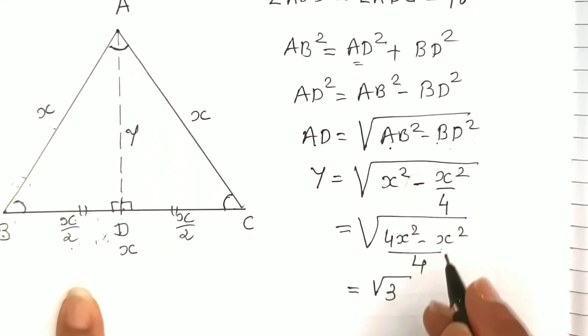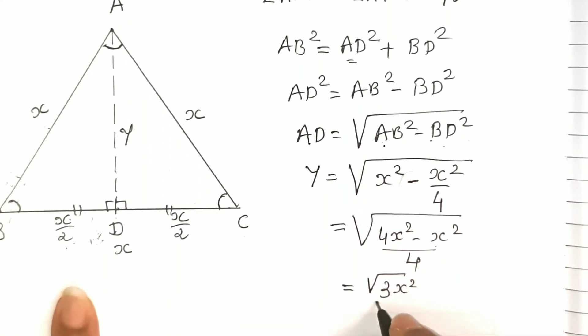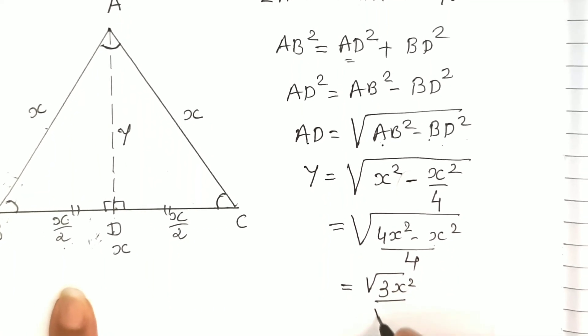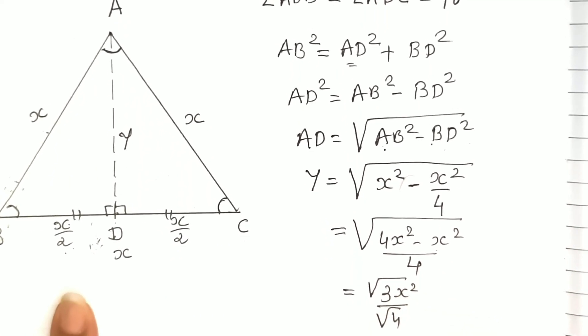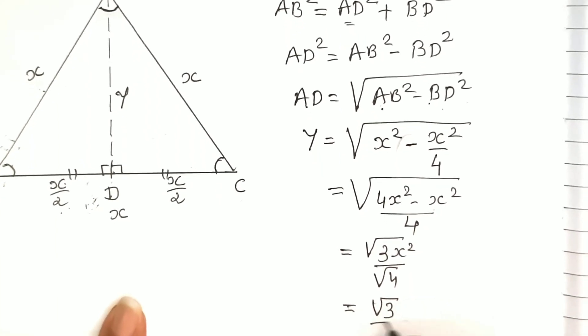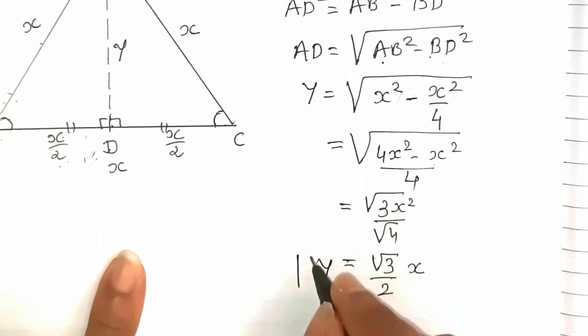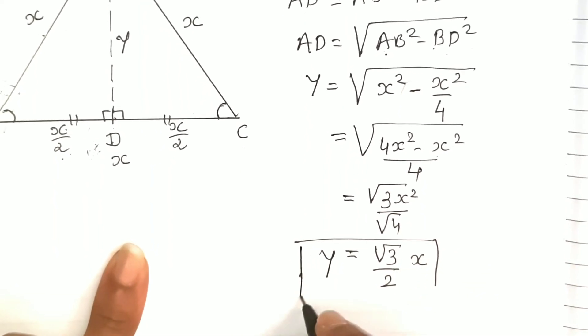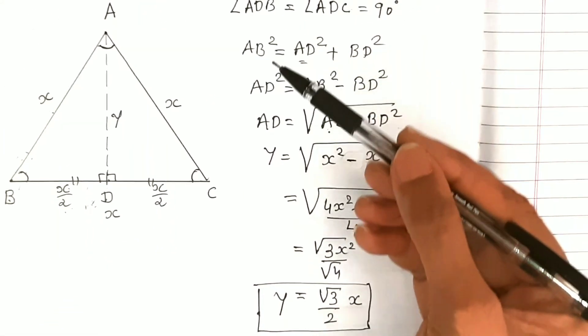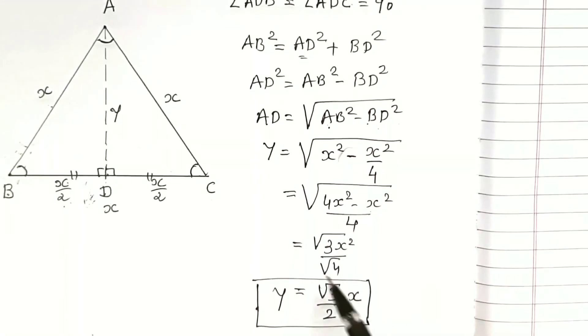So we get the square root of 3x squared upon the square root of 4. We can also write it as the square root of 3 upon 2 times x. This is how we have derived the formula that altitude equals the square root of 3 upon 2x.